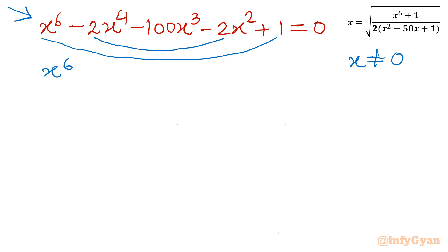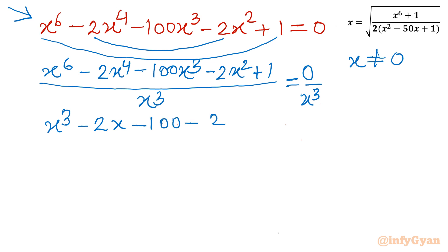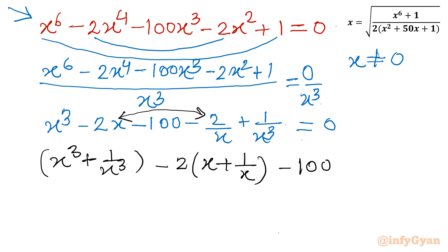So we can divide the entire equation by x³. Dividing x⁶ - 2x⁴ - 100x³ - 2x² + 1 by x³ gives: x³ - 2x - 100 - 2/x + 1/x³ = 0. Now I will group the first and last terms together, and the second and second-last terms together: (x³ + 1/x³) - 2(x + 1/x) - 100 = 0.